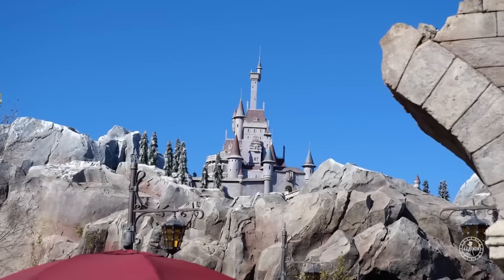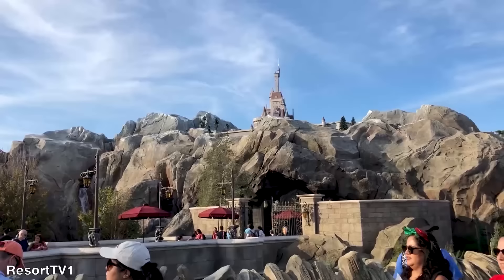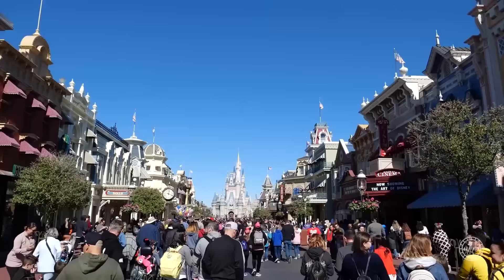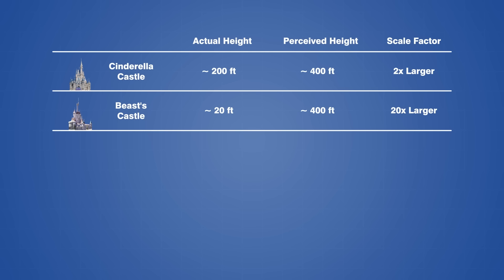However there is one other castle that we still need to talk about which doesn't have the advantage of scale, and that is the Beast's Castle in the Magic Kingdom. This is probably the worst instance of forced perspective that you can find at any of the Disney parks, but it's a perfect example of what happens when the illusion is pushed too far. The castle only stands about 20 feet tall on top of the Be Our Guest restaurant, however it is supposed to look closer to 400 feet, which is 20 times its actual size. For comparison, Cinderella Castle at the end of Main Street is also supposed to look like 400 feet, but that's only twice its actual size since it's already just under 200 feet to begin with. Forced perspective tends to work really well for small to moderate changes in perceived scale, but it becomes less and less effective as the scale is stretched further and further.